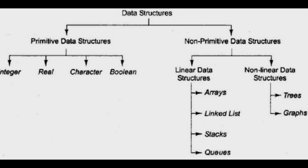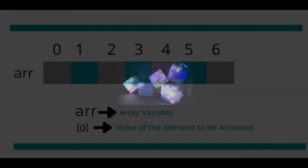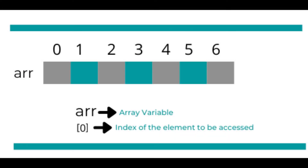The first example is array. Array is a collection of similar data items in a contiguous memory allocation. For example, it stores similar data types such as characters A, B, C — that is called an array.